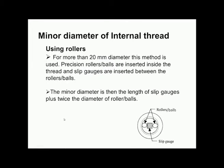The second method uses rollers or balls and is used when the screw thread diameter is more than 20 mm. Precision rollers or balls are inserted inside the thread, and slip gauges are inserted between the rollers or balls. The rollers or balls of the same diameter are in contact with the internal thread, and the gap between them is filled with slip gauges. The minor diameter is calculated by adding the diameters of the two rollers plus the slip gauge width.